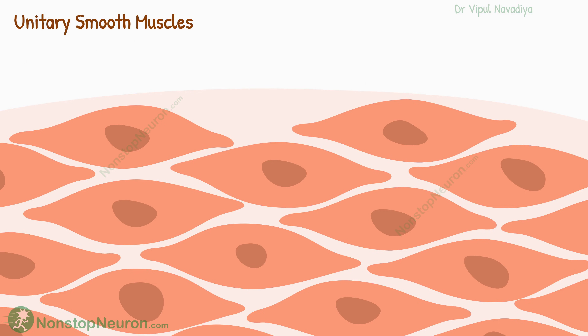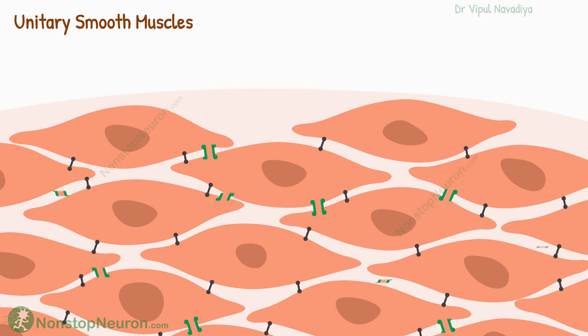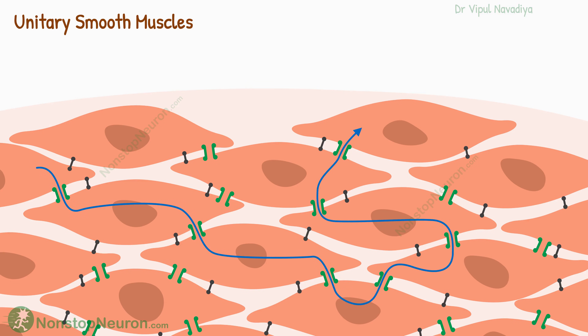Now let's talk about unitary smooth muscles. In this, neighboring fibers adhere to one another at multiple points, allowing force generated in one muscle fiber to be transmitted to the next. Also, their cytoplasm is connected by gap junctions, which allows free electrical and chemical communication between neighboring cells. Because of such an arrangement, the entire muscle contracts as a single unit, or a syncytium. That's why they are called unitary smooth muscle, or syncytial smooth muscle. They are controlled largely by non-nervous stimuli.